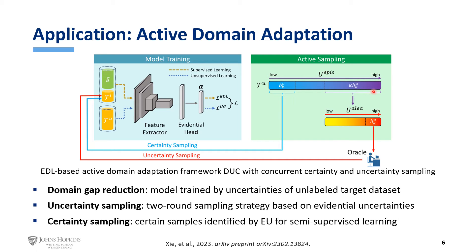For the uncertain ones, we pass them to the second round and further sort the samples using their aleatoric uncertainty. We finally pick the most aleatorically uncertain ones, pass them to the oracle, obtain their labels, and then add them to the labeled target dataset.